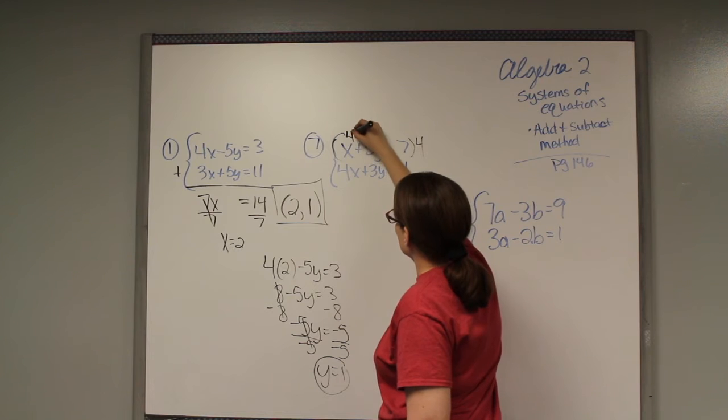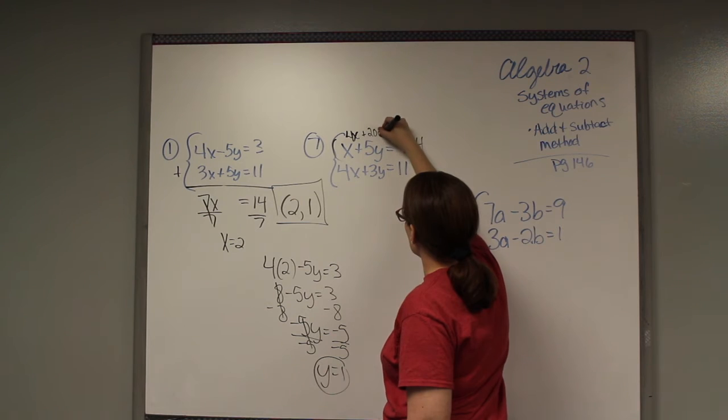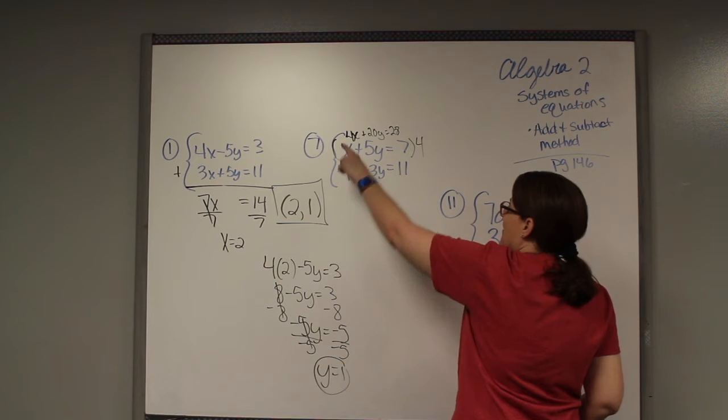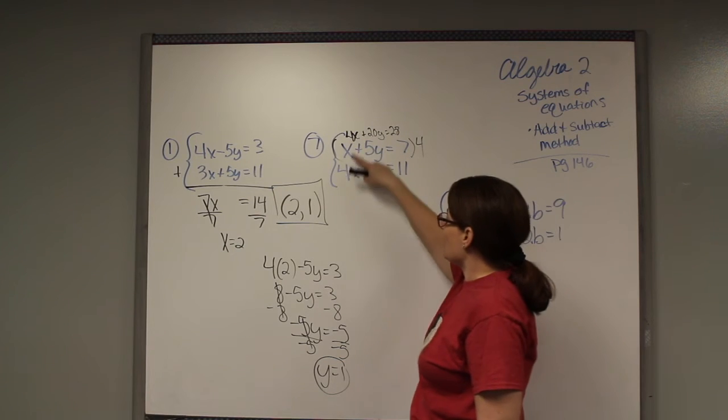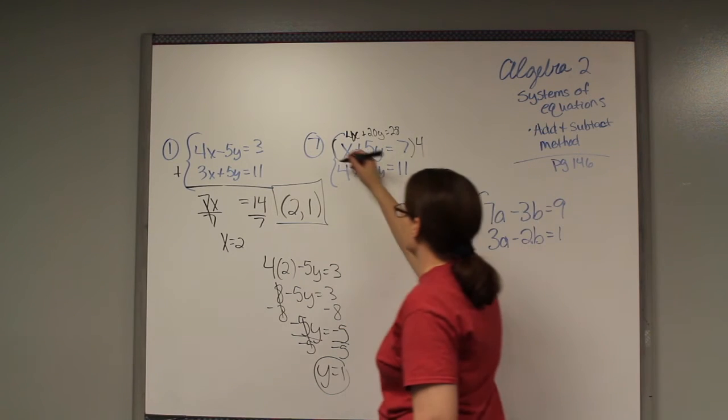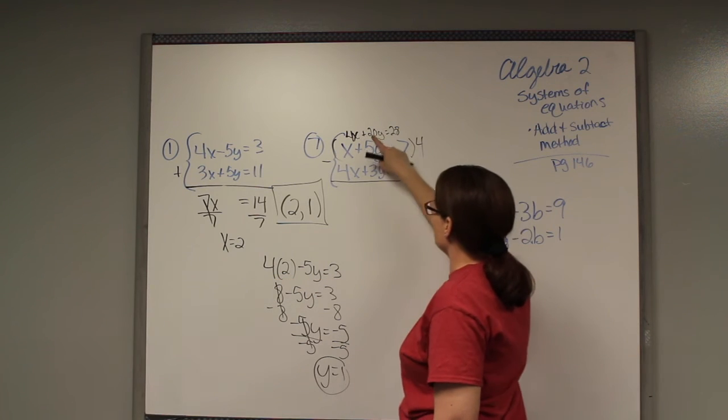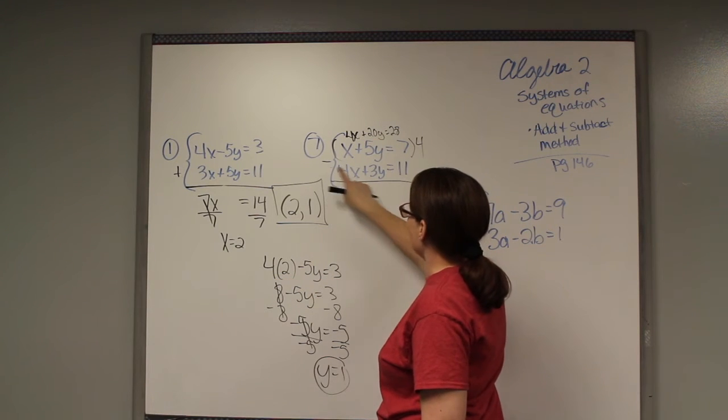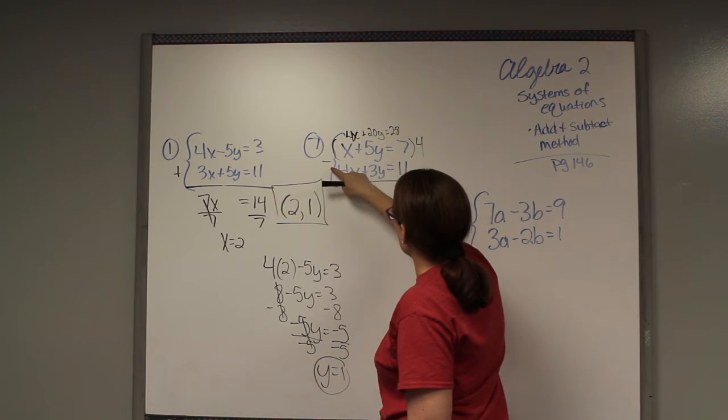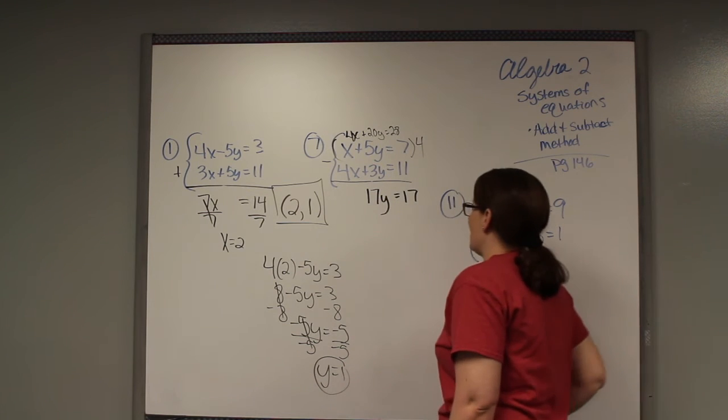4 times x gives me 4x. 4 times 5y is going to give me 20y, and 4 times 7 gives me 28. Now I have a 4x and a 4x. If I add them, I'm getting 8x, so they're not going to cancel. So I need to subtract them. 4x minus 4x is nothing, so x is gone. Then I have 20 minus 3, so that's going to be 17y. And then I have 28 minus 11, which is going to be 17.